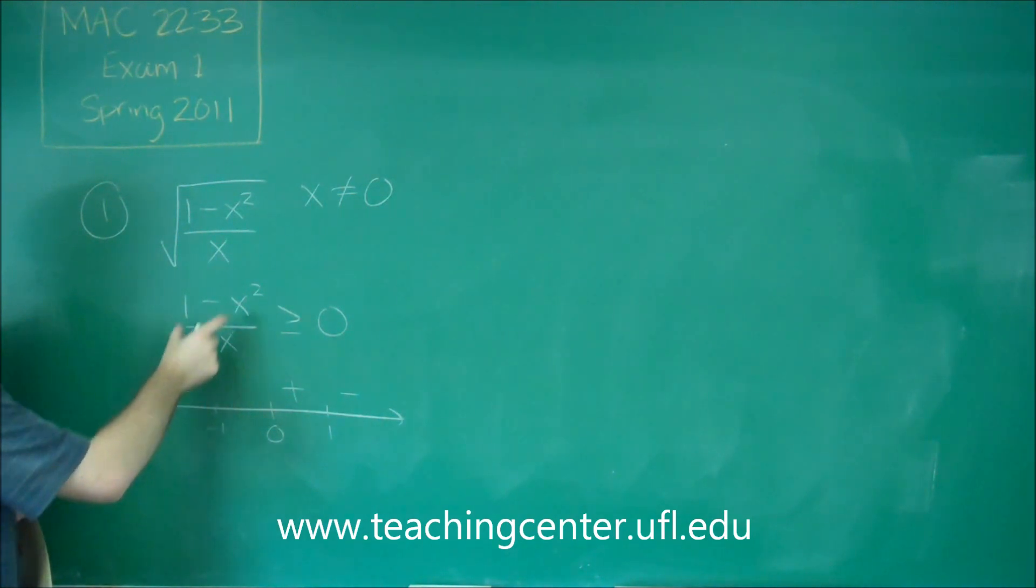These two things over here, for the numerator, are going to be the same as the ones on the right, because we have it squared. But now we're going to be dividing by a negative number, so these are going to flip. So instead of a positive, we're going to have a negative, and instead of a negative, we're going to have a positive.